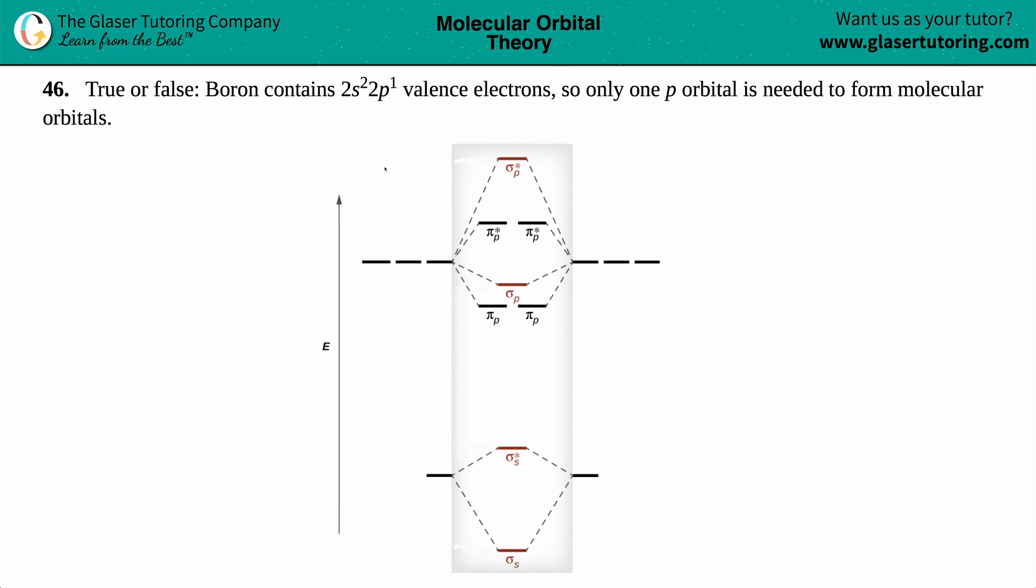Number 46. True or false? Boron contains 2s2, 2p1 valence electrons, so only one p orbital is needed to form molecular orbitals.